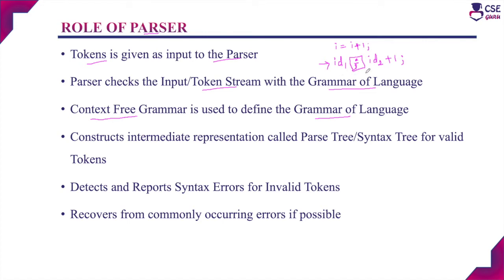The syntactical structure of any programming language is defined by the context-free grammar, which we will discuss separately in one session. If the parser confirms the token stream is according to the syntactical structure and it is a valid one, it will construct the intermediate representation called the parse tree or the syntax tree. If the token stream is invalid, the parser will detect these syntax errors and report them to the user. If there are simple or commonly occurring errors, the parser will automatically recover from them so that it can continue to process the token stream.